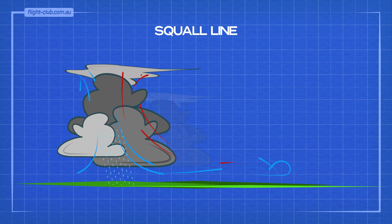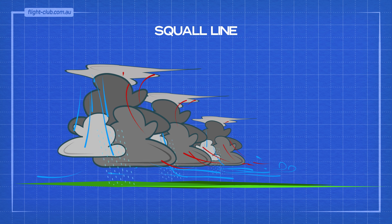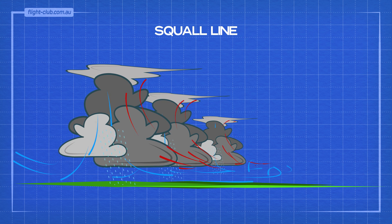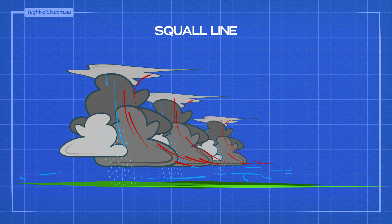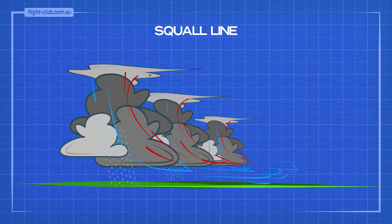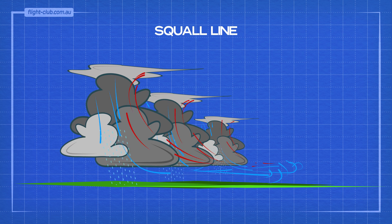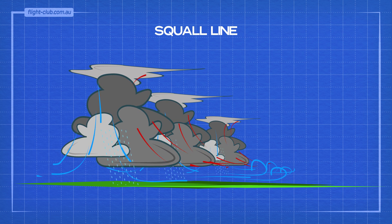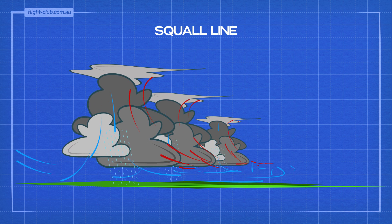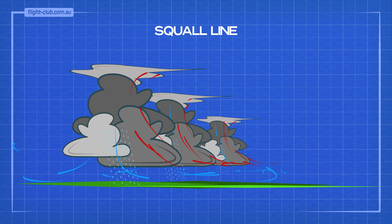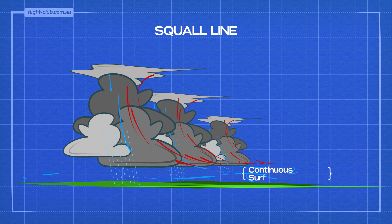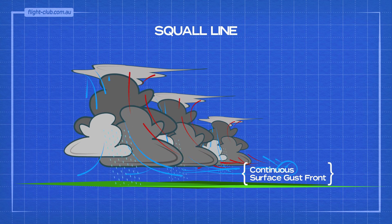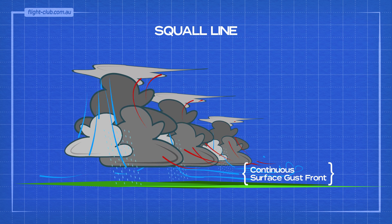A squall line is a multi-cell thunderstorm where the cells are arranged in a line. The adjacent cells form a continuous line of thunderstorms accompanied by a strong and continuous surface gust front at the line's leading edge.